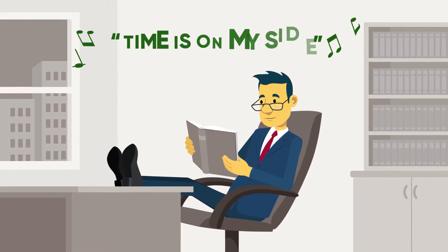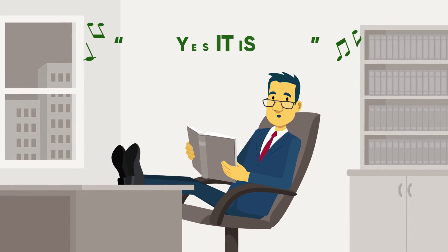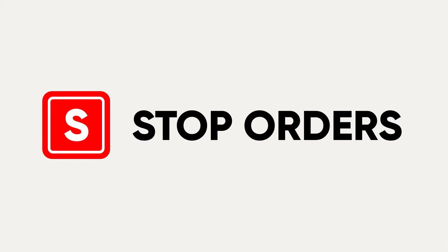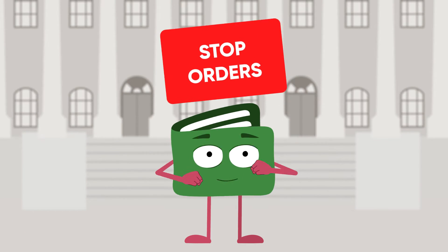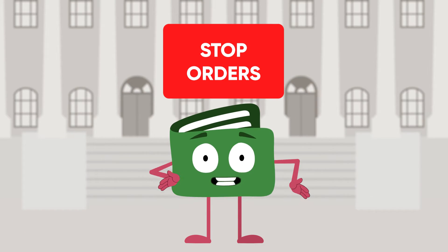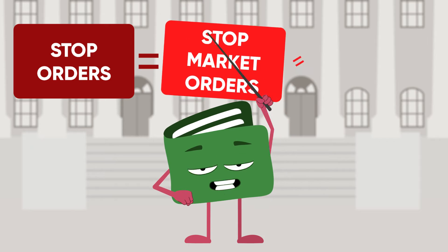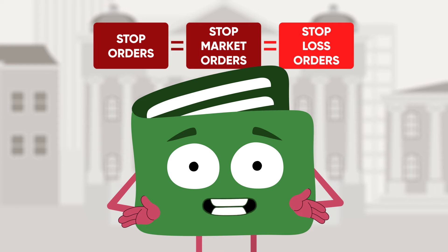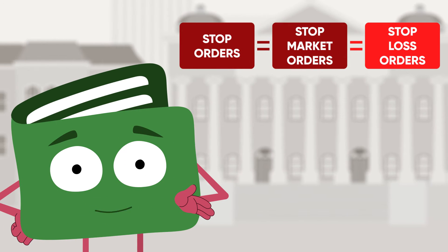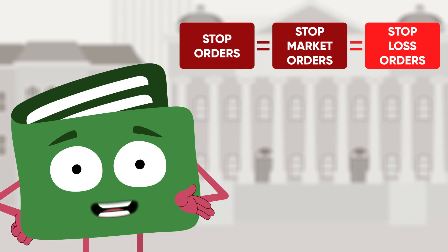The third and final type of order we'll be talking about in this video are stop orders, which are a bit more complex than the market or limit orders. The first thing that might be confusing with stop orders is that you'll also hear investors call them stop market orders or stop loss orders. This may sound complicated, but there's a good reason for each of these names. For now, just remember that we're talking about the same thing.